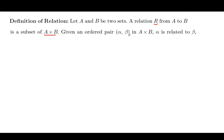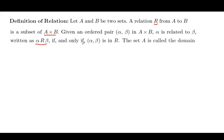The ordered pair like alpha and beta, which belongs to the Cartesian product between A and B, are in relation. We write: alpha is in relation with beta if and only if alpha and beta belongs to that set. So when we are talking about a relation, we're talking about a set.